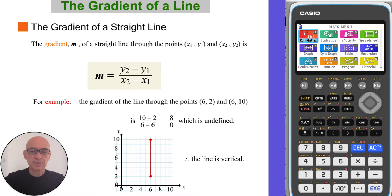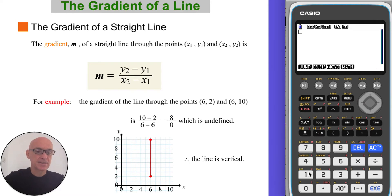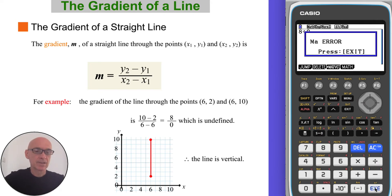In this example, the gradient of the line through the points given is found by calculating y2 minus y1 over x2 minus x1, giving a gradient which has a value of 8 over 0, which is undefined. If you try to calculate 8 divided by 0 on the calculator, it will tell you it's a mathematical error. As can be seen from the diagram, the line is vertical.